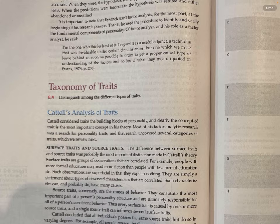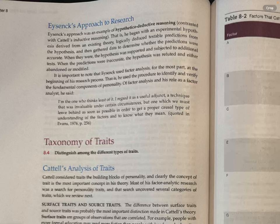Eysenck's Approach to Research. Eysenck's approach was an example of hypothetico-deductive reasoning, contrasted with Cattell's inductive reasoning. That is, he began with an experimental hypothesis derived from an existing theory, logically deduced testable predictions from the hypothesis, and then gathered data to determine whether the predictions were accurate. When they were, the hypothesis was supported and subjected to additional tests. When inaccurate, the hypothesis was refuted and either abandoned or modified. It is important to note that Eysenck used factor analysis primarily at the beginning of his research process — to identify and verify the fundamental components of personality. Of factor analysis, he said: 'I am the one who thinks least of it. I regard it as a useful adjunct, a technique invaluable under certain circumstances, but one which we must leave behind as soon as possible in order to get a proper causal understanding of the factors and to know what they mean.'